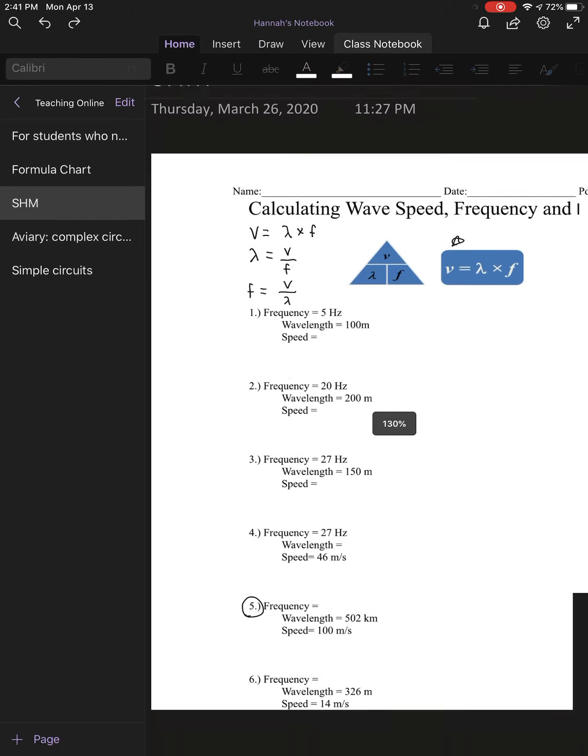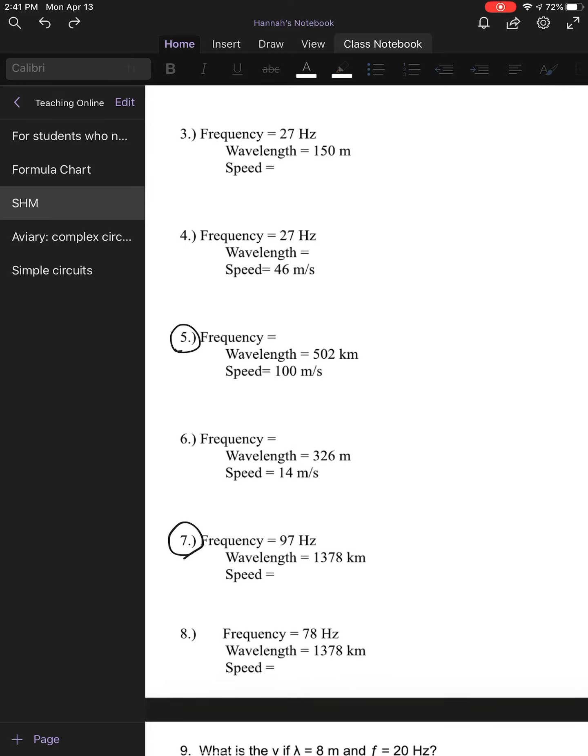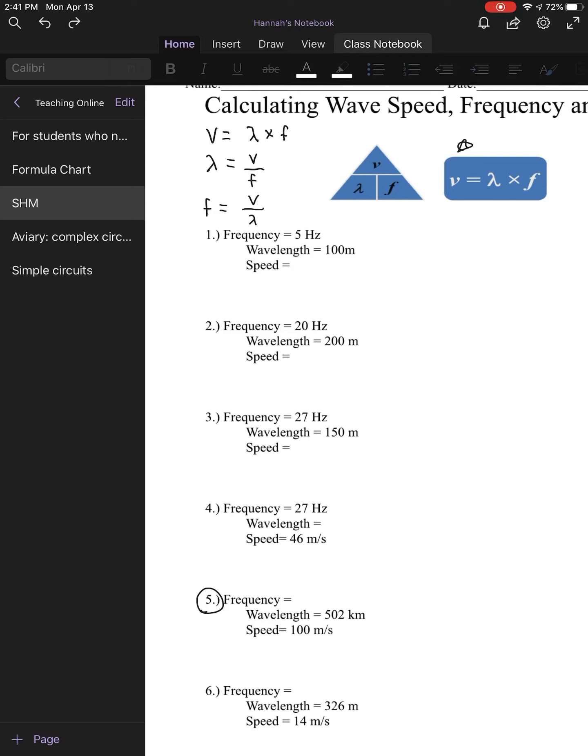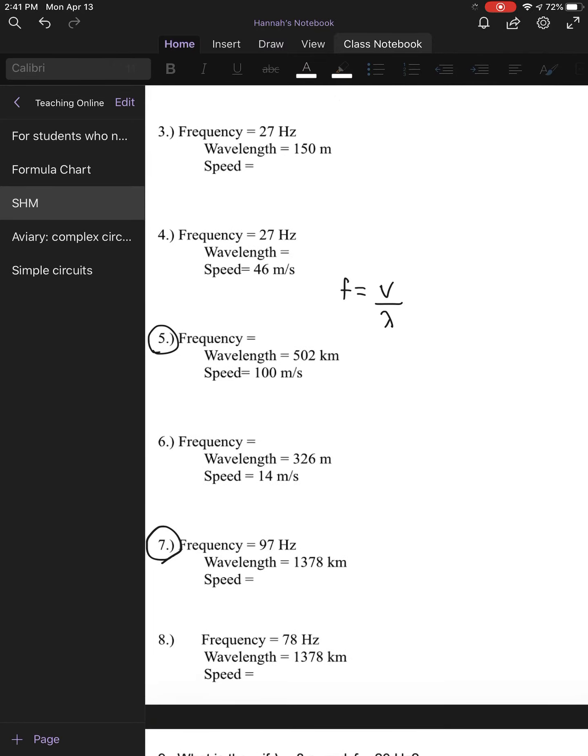So now we're going to solve our first problem, number five, using our frequency equation. Again, frequency is equal to velocity divided by wavelength. And what they're telling me is that my lambda, or wavelength, is 502 kilometers, and my speed is 100 meters per second.